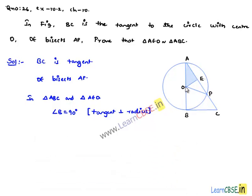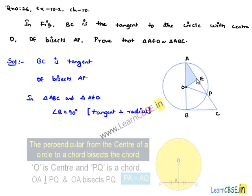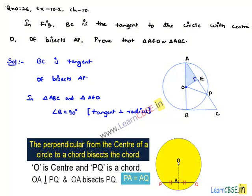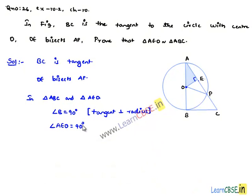Since OE bisects AP, and AP is a chord, we know that the bisector of a chord from the center is always perpendicular to that chord. Therefore, angle AEO is also equal to 90 degrees. So angle AEO equals angle ABC equals 90 degrees, as proved above.